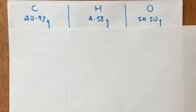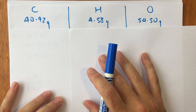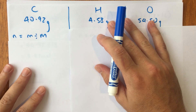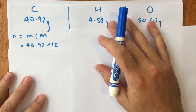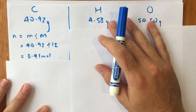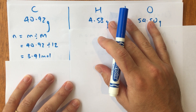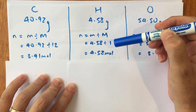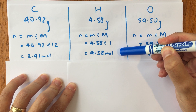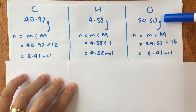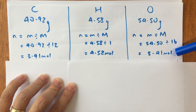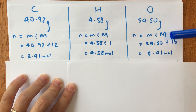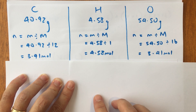The second step is to turn those masses into a number of moles. For carbon, I go mass divided by molar mass: 40.92 grams divided by 12 grams per mole from the periodic table, giving 3.41 moles. For hydrogen, 4.58 grams divided by a molar mass of 1 gives 4.58 moles of hydrogen. For oxygen, 54.50 grams divided by 16 grams per mole gives 3.41 moles of oxygen. So I've turned the percentage composition into a mass, then into a number of moles of each element in my 100 gram sample.